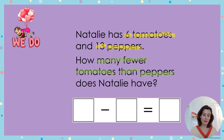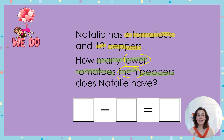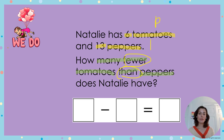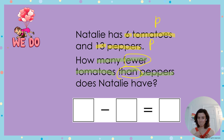I'm also going to circle some of these words because they're very important. When I see 'how many fewer' and the word 'than' — how many fewer tomatoes than peppers does Natalie have — they're asking you to find the difference between the two parts. 6 is a part, 13 is a part. I'm trying to find the difference between the two, so I need to subtract.